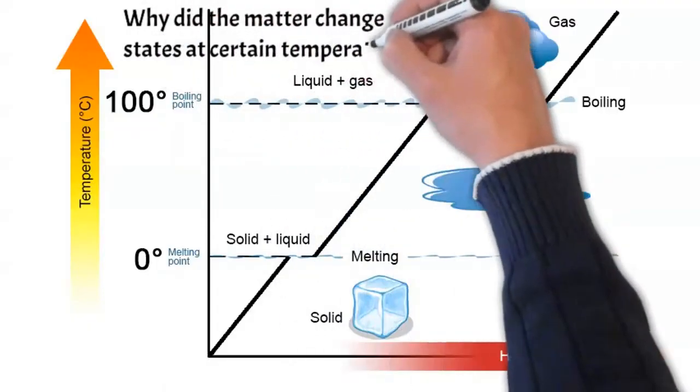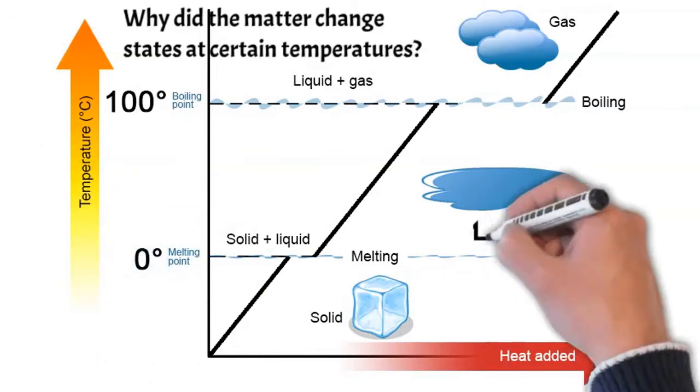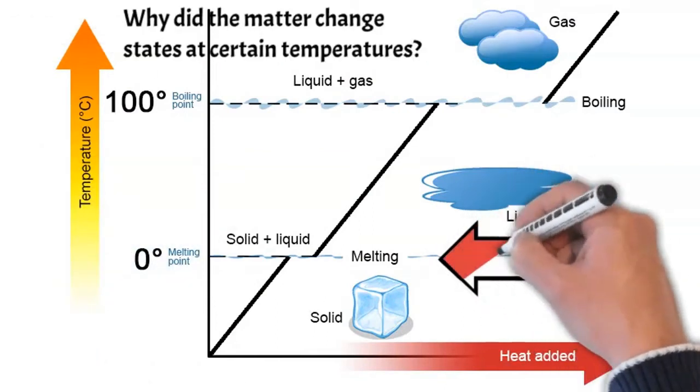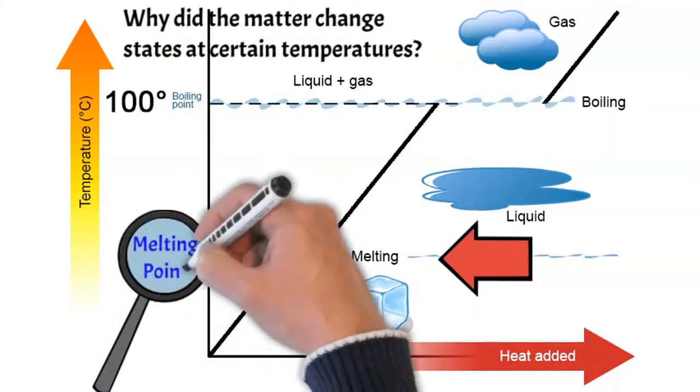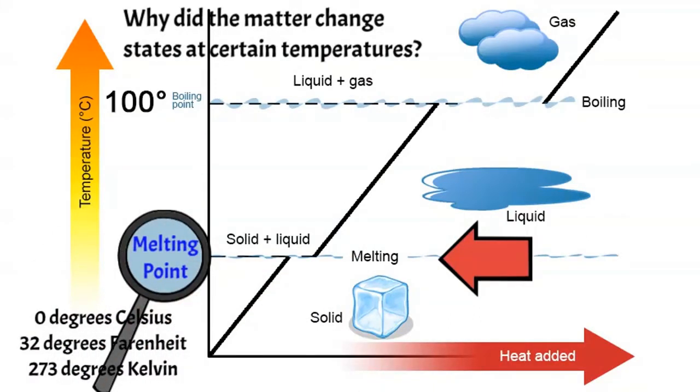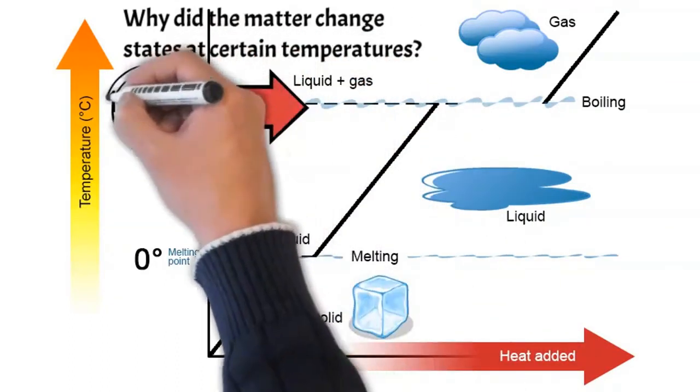Why did the matter change states at certain temperatures? It changed because it had reached its melting point, which is the point at which a solid changes to a liquid. The water molecules change states again when they reach the boiling point.